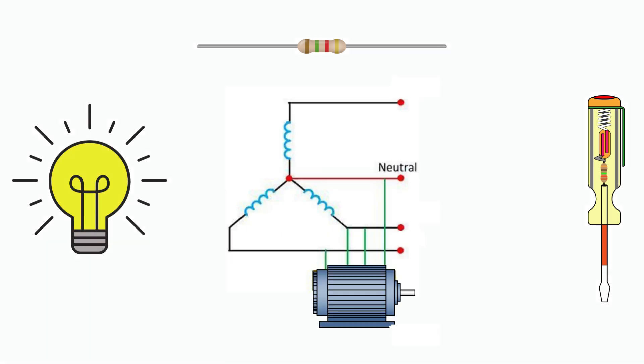Here's what a three phase circuit looks like. You have three live wires, each carrying its own wave of power, and usually a neutral wire. This setup allows for a steady and balanced flow of electricity, which is perfect for running large motors and equipment efficiently.